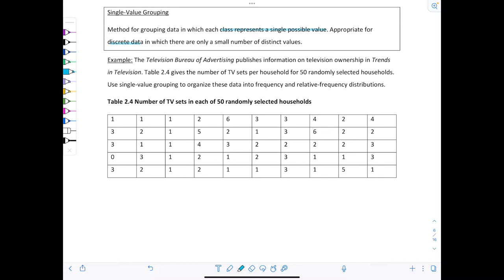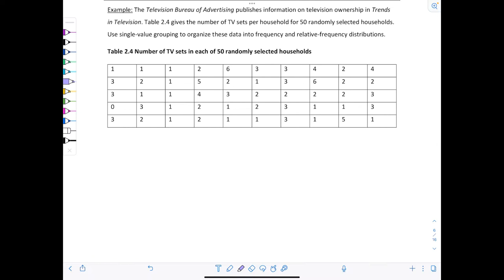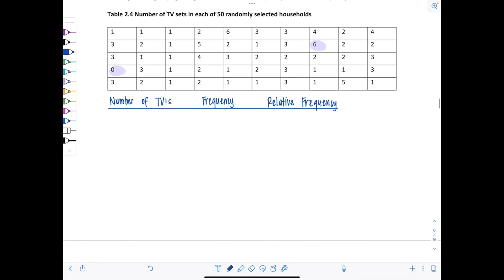Here they're giving us the number of TV sets in each of the 50 randomly selected households. We're going to make a frequency and relative frequency distribution. I notice here someone reported zero. That looks like the minimum, so that's going to be my smallest class. The max is 6. So number of TVs, and then we'll list the frequency for each, and then the relative frequency.